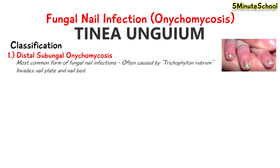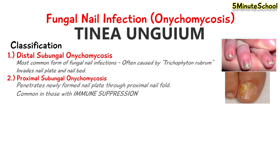Another type is called proximal subungual onychomycosis, which penetrates a newly formed nail plate through the proximal nail fold. This type of infection more commonly affects those with immune suppression.